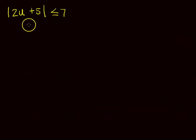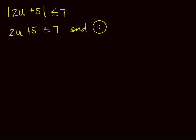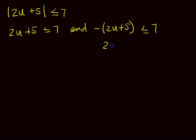Let's do the less than or equal to situation. Everything on the left is the absolute value of 2u plus 5, and everything else is on the right, equal to 7. Because it's less than or equal to, we use the conjunction AND and split it up: 2u plus 5 is less than or equal to 7, AND the opposite of 2u plus 5 is less than or equal to 7. You can also skip straight to 2u plus 5 is greater than or equal to negative 7 — just make sure you don't get confused.